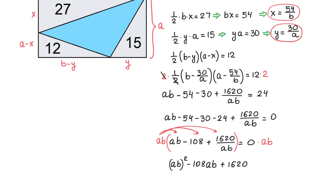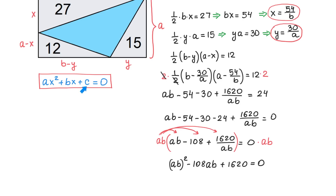And AB times 1620 over AB is 1620, so we have AB squared minus 108 AB plus 1620 equals 0. Recall that a quadratic equation has the form Ax squared plus Bx plus C equals 0. The equation we got is also a quadratic equation where the unknown is the product AB. If we can solve this equation we can find the product AB, and this product AB represents the area of the rectangle.